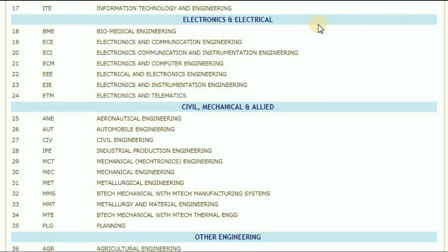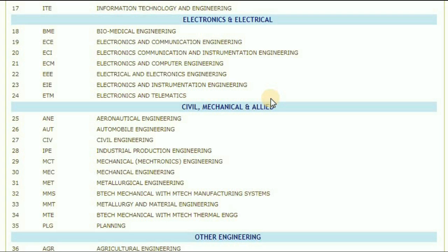Coming to electronics and electrical. BME — biomedical engineering. ECE — electronics and communication engineering. ECI — electronics, communication and instrumentation engineering. ECM — electronics and computer engineering. EEE — electrical and electronics engineering. EIE — electronics and instrumentation engineering. ETM — electronics and telematics.